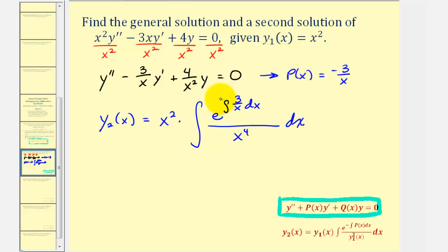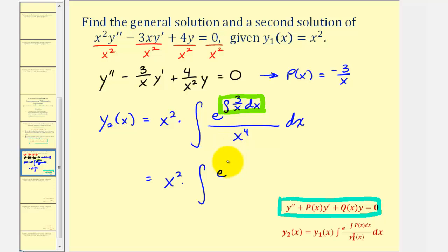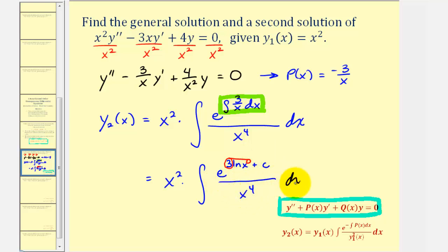Let's focus on the inner integral. We have x squared times the integral of e raised to the power of three natural log x plus a constant c. Moving the three as a power on x, this becomes e raised to the power of natural log x cubed plus c, all divided by x to the fourth, dx.